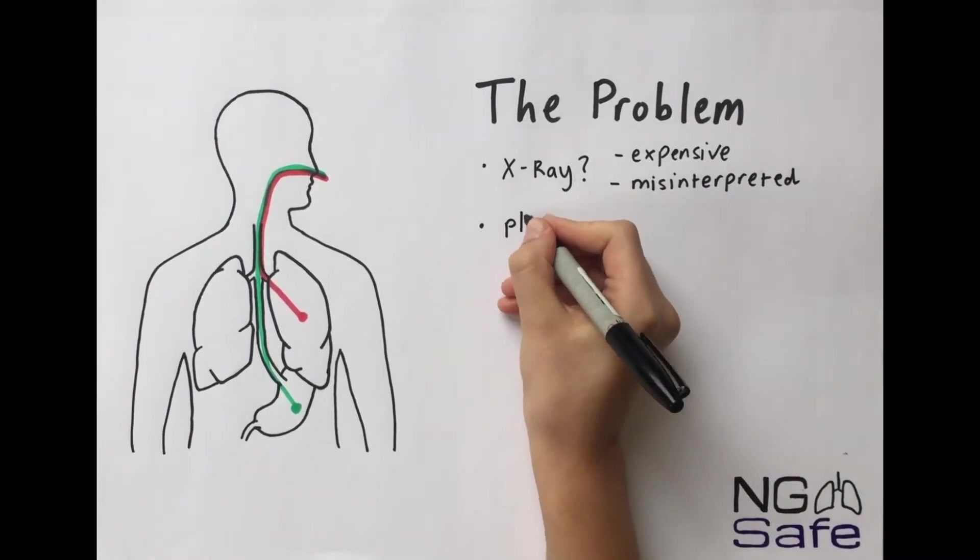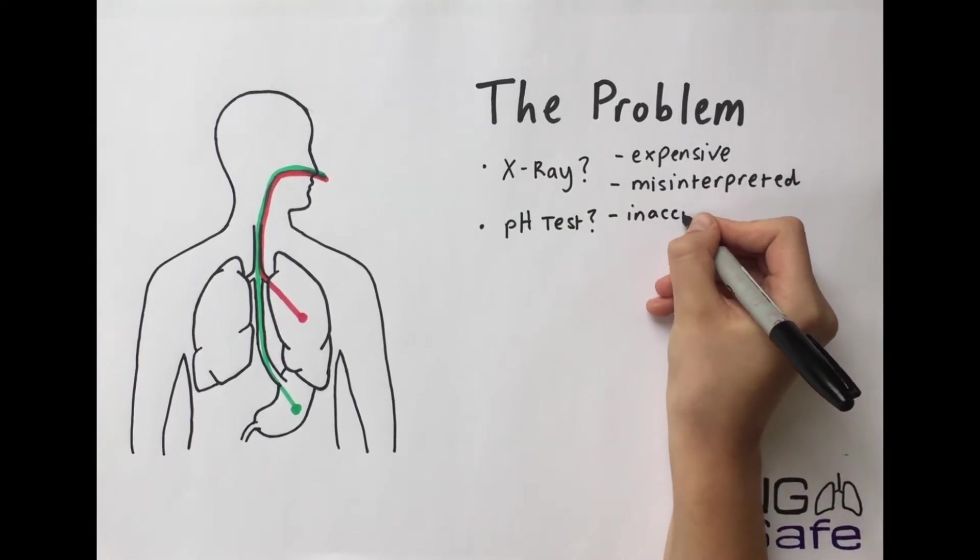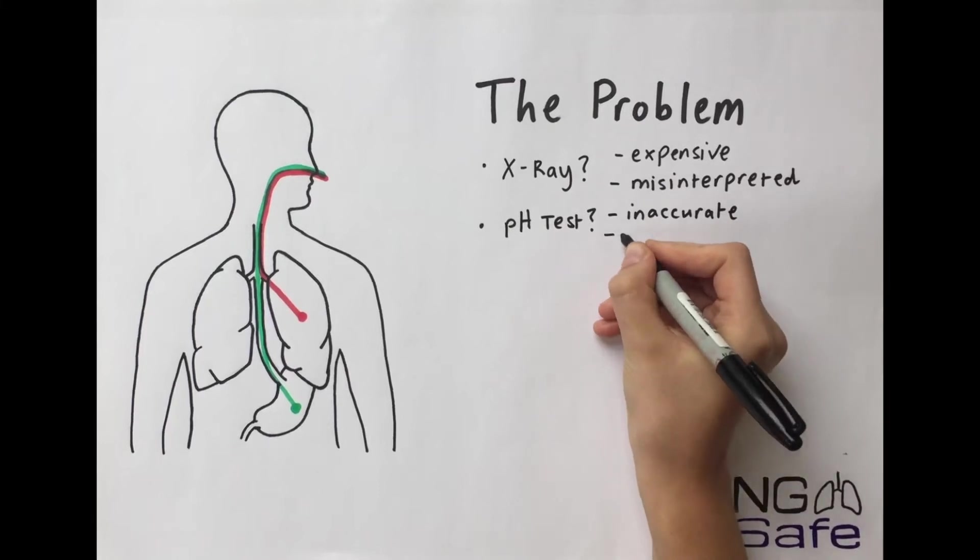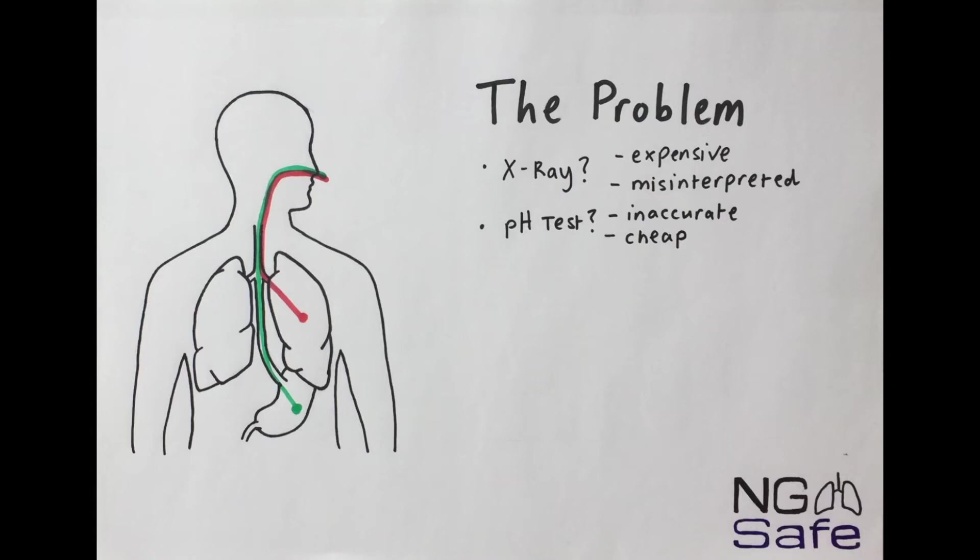The alternative is a pH test which is very cheap but extremely low accuracy. pH is also highly variable depending on the time of day, the medications that the patient is on, or even what they've had to eat.